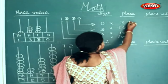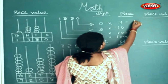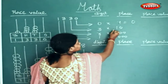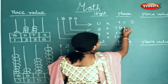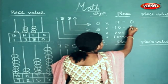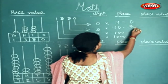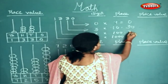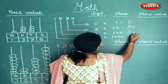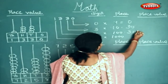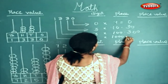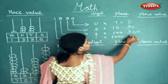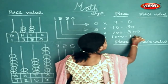Zero into one is equal to zero. Three into ten will be 30. Three into hundred will be 300. One into thousand will be 1000.